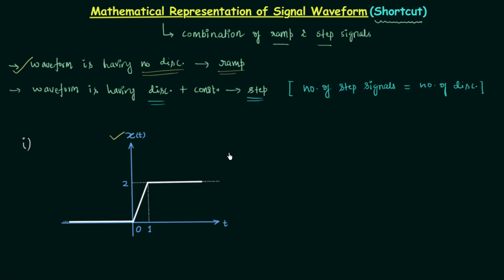I will explain the step-by-step process for the shortcut method. We start from the left side of the waveform and follow the signal flow. Initially the flow of the signal is flat and x(t) is equal to 0. At t equal to 0, the signal turns upward and the flow changes.